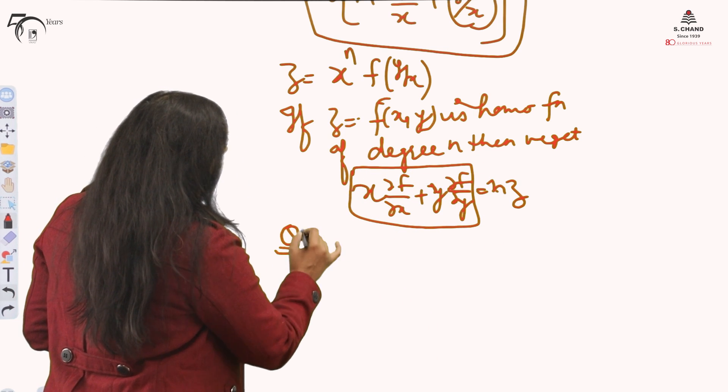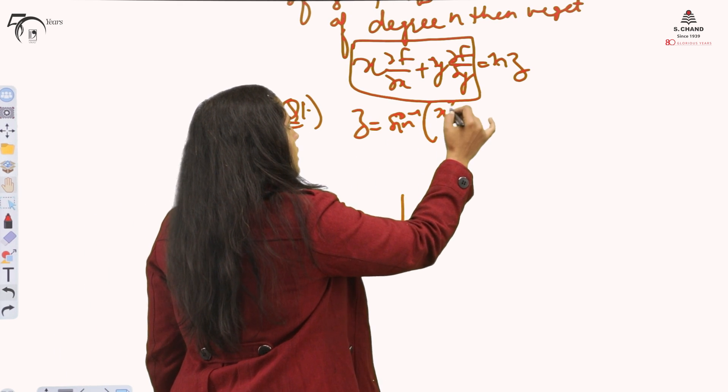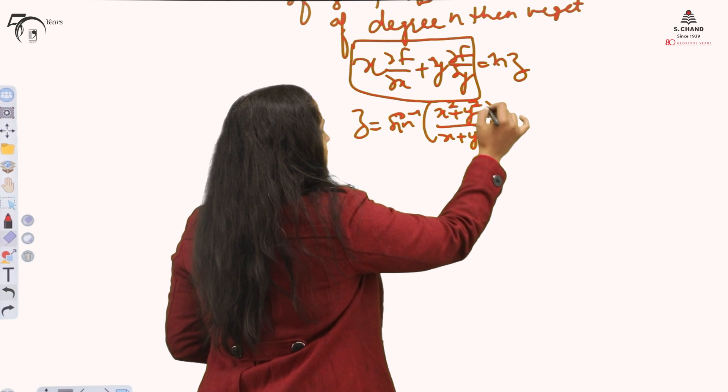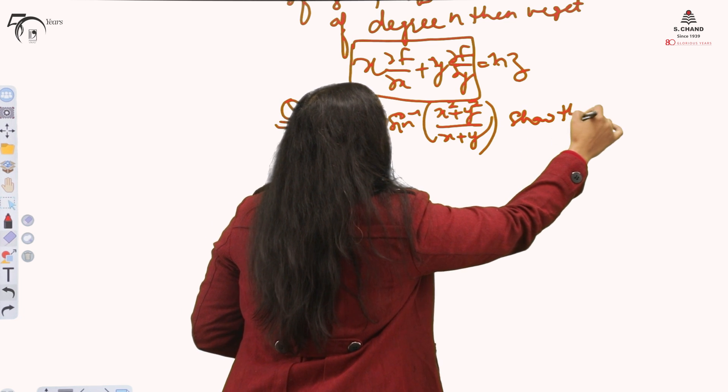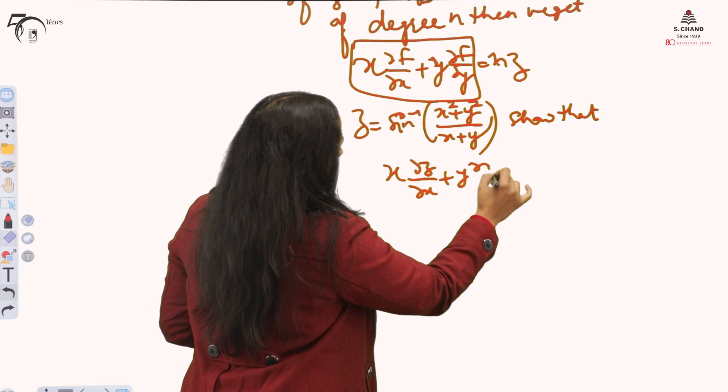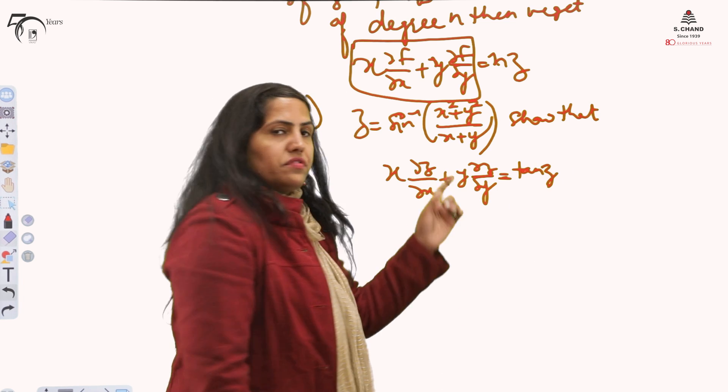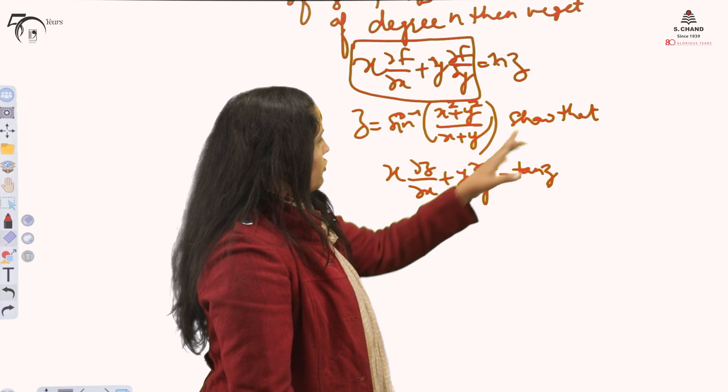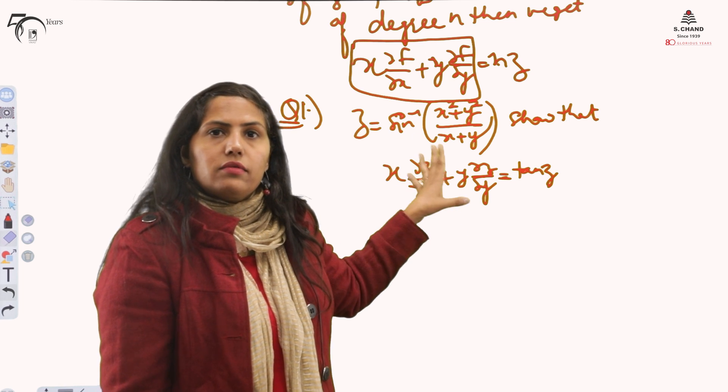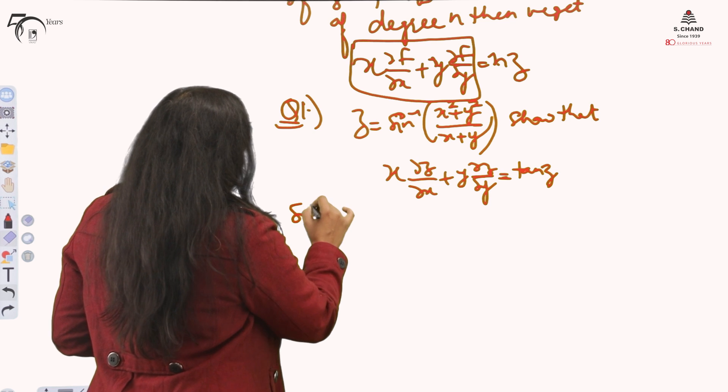Let's take an example. The very first example is let z is sine inverse of (x squared plus y squared) over (x plus y). Show that x del z by del x plus y del z by del y is tan z. This type of question, how to check or how we understand that this is Euler's theorem question and it is homogeneous function. We will start step by step.